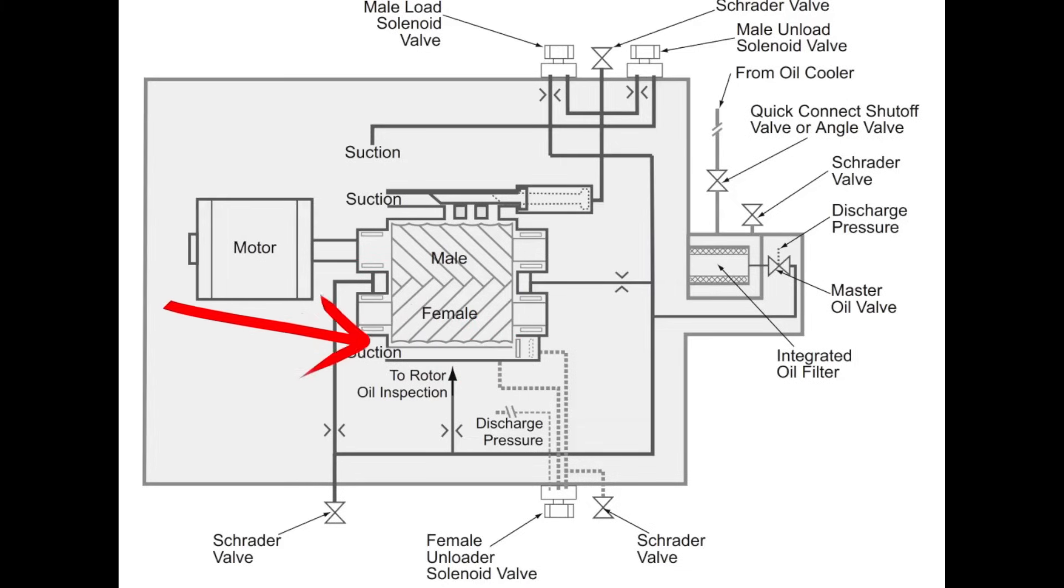So by having this bypass open here, we are reducing how much pull comes our suction gas over here. So by reducing that suction pull, it gives our metering device time to kind of catch up and get control of the superheat, while also reducing the starting current on the motor. And then once the motor comes online, we're stable for a few seconds, it doesn't take long, you'll hear this female unloader engage.